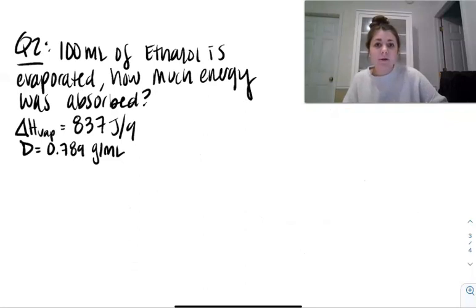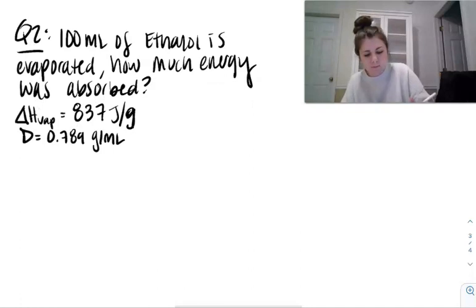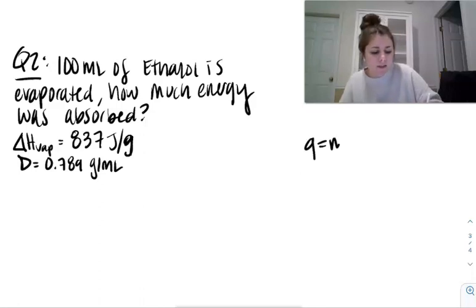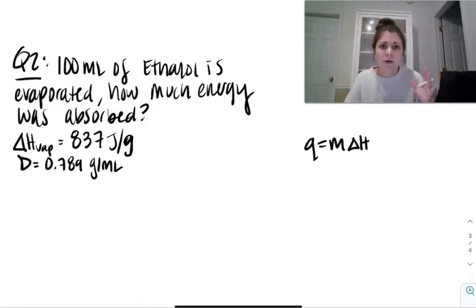All right. So in this problem, you have 100 milliliters of ethanol and it's going to evaporate. How much energy was absorbed to have ethanol go from its liquid to gas form? So I gave you the delta H of vaporization, 837 joules per gram. And then I gave you the density of ethanol. So pause the video and try this out yourself. Assuming that you guys tried the video, first things first, because this is evaporation that we don't see temperature involved, means we need to use this equation.